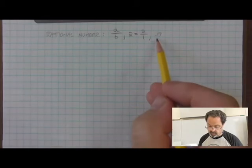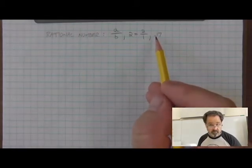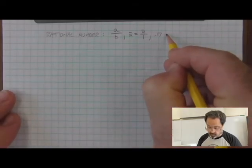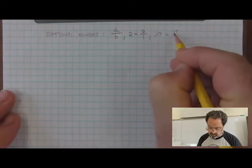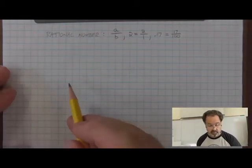Also, this decimal number that has a decimal point is rational. It's not a fraction when we look at it like that. But 0.17 can be expressed as 17 over 100. So 0.17 is a rational number.